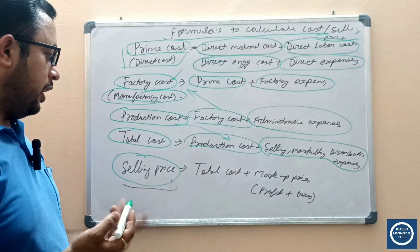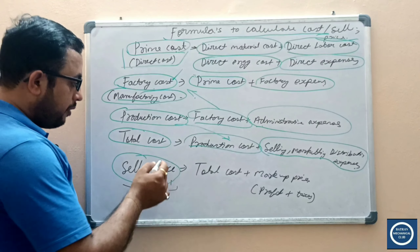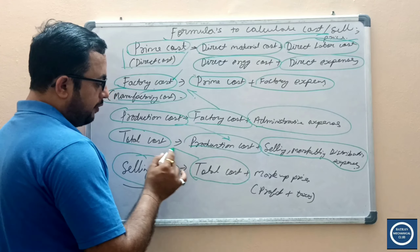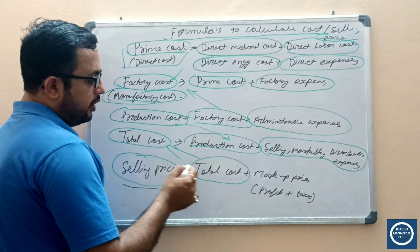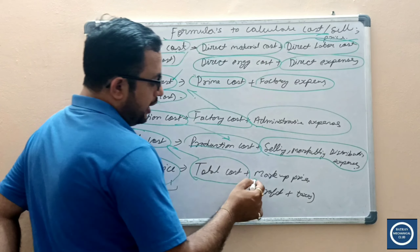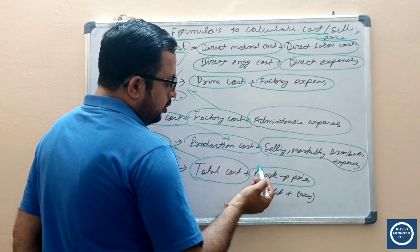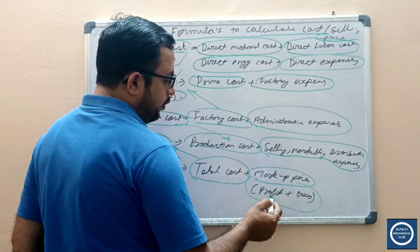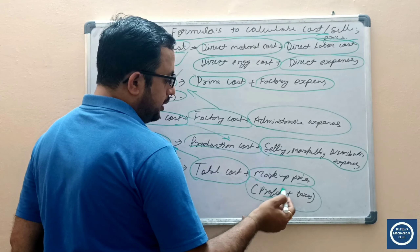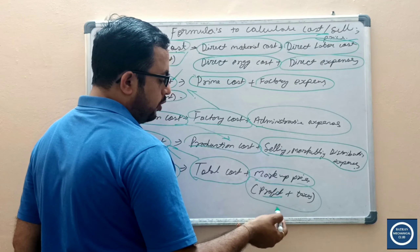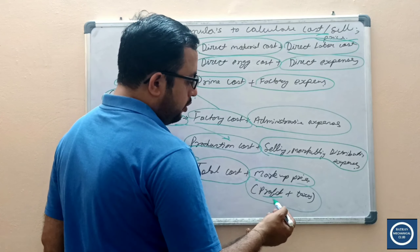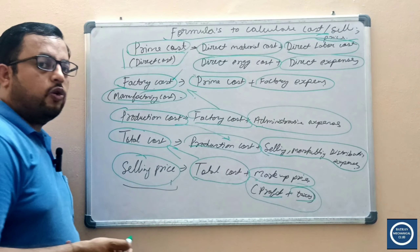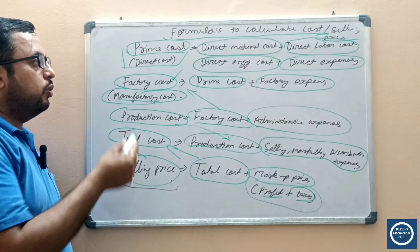Our last step is to calculate the selling price — at what price we sell our product to the customer. Selling price is the sum of your total cost plus markup. Markup includes your profit percentage — how much profit you want to keep on your product — plus the taxes you have to pay to the government.